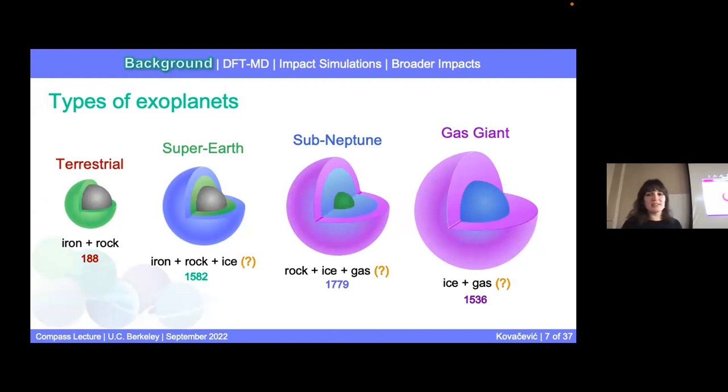These exoplanets can be categorized into four types of planet: 188 of them being categorized terrestrial, so iron and rocky rich. There are super earths. So there's 1,582 of these, they are considered rich in iron, hypothesized to be rich in iron, rock and ice. Sub Neptune, so a little smaller than Neptune are 1,779 of these hypothesized to be rich in rock, ice and gas. And then finally, we have these gas giants, which are hypothesized to be rich in ice and gases.